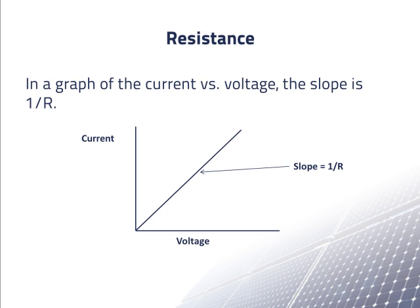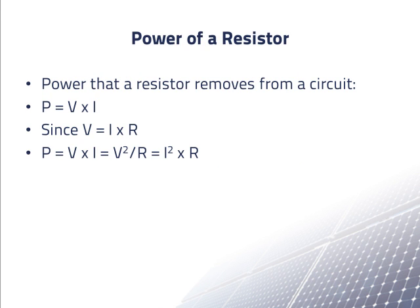In a resistor's range of operation, the current is proportional to the voltage. We can draw a graph of the current in the resistor as a function of voltage as shown here. This results in a straight line as a result of Ohm's law. As for all the elements, the power flow is equal to the voltage times the current. For a resistor, power is removed from the circuit and becomes heat.